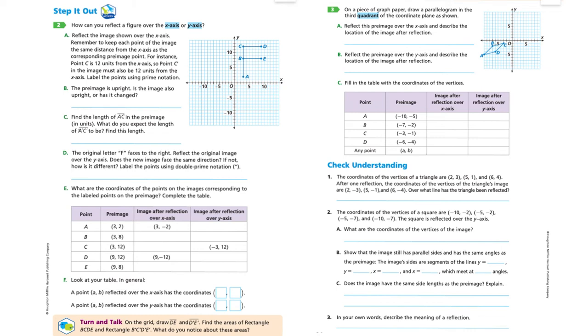On this next page, number three, on a piece of graph paper, draw a parallelogram in the third quadrant. Here's quadrant three. Reflect this pre-image over the x-axis and describe the location of the image after the reflection. What quadrant is it in? What does it look like? Is it facing the same way? What are the similarities? What are the differences? Now they want you to reflect the image over the y-axis and again, describe the location of the image after the reflection. In C, they have a table for you to fill out similar to this one here, and what happened to each point.